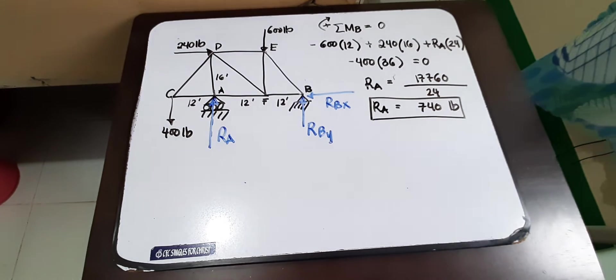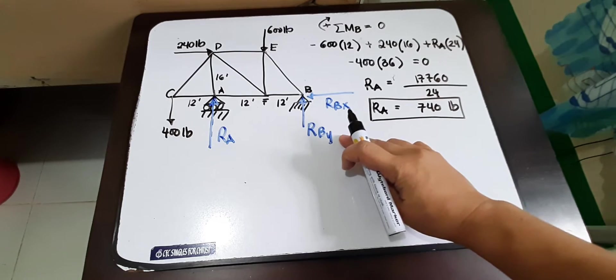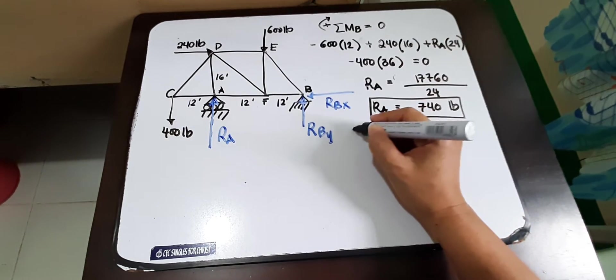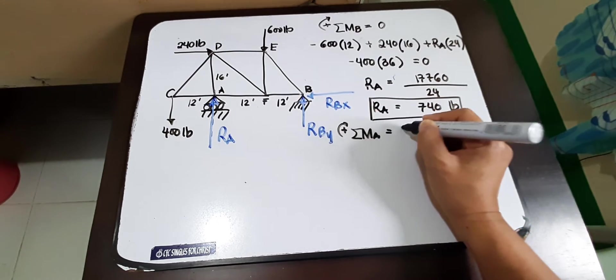Okay, so next thing is we get the, it's either RBY or RBX. So if we are going to take moment at A, take the moment at A, take clockwise as positive.